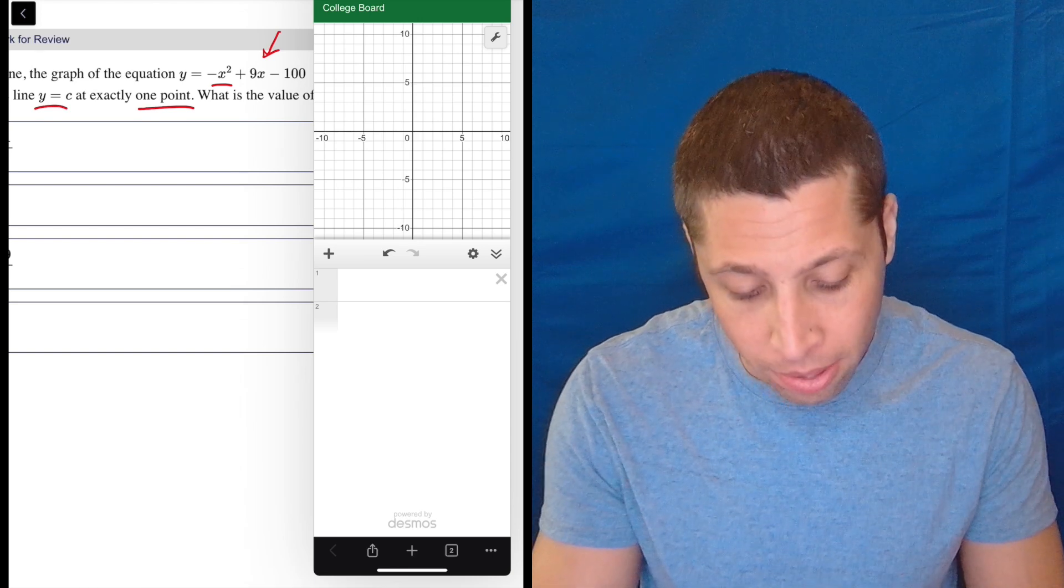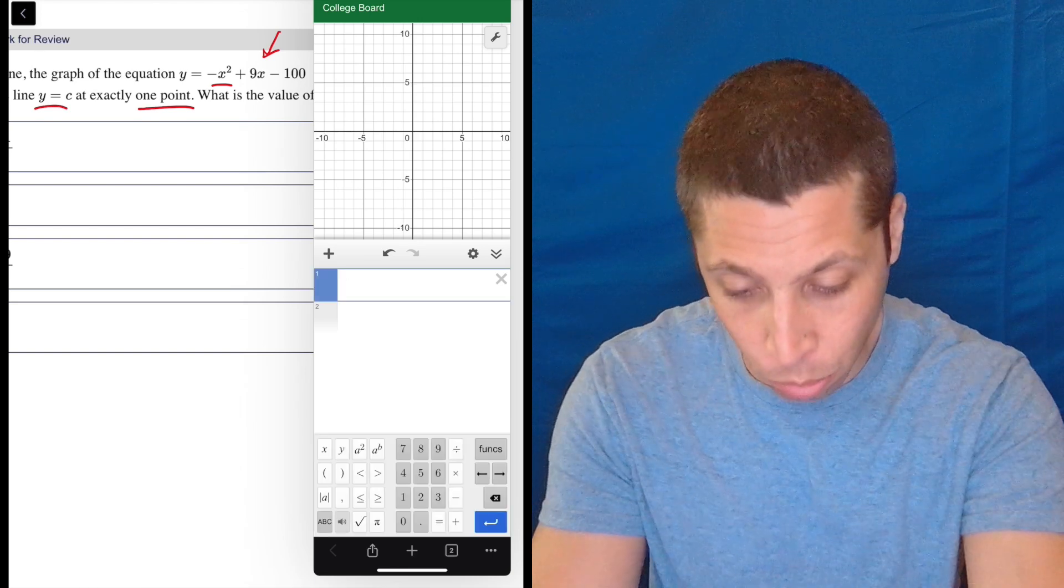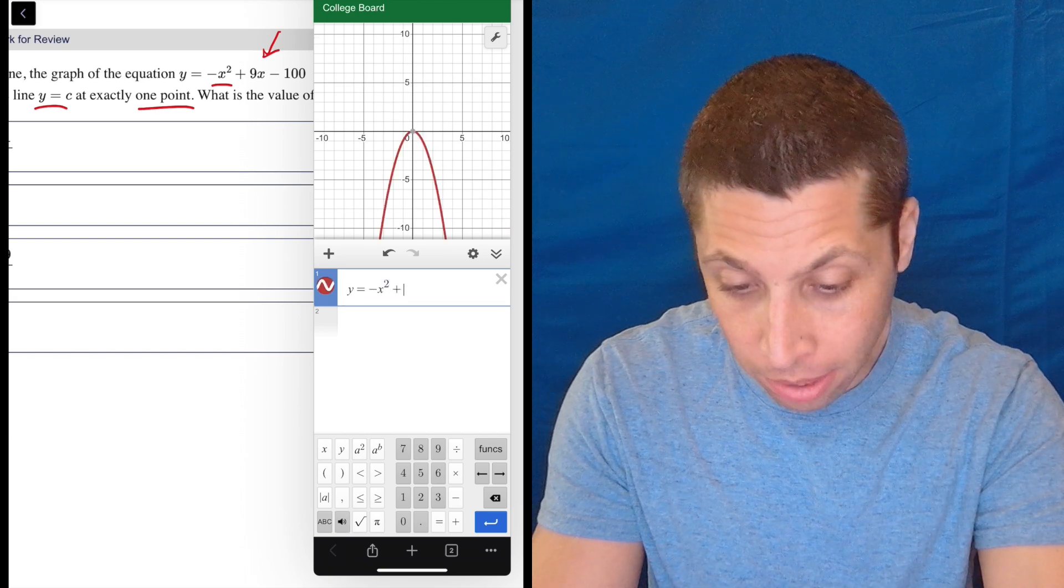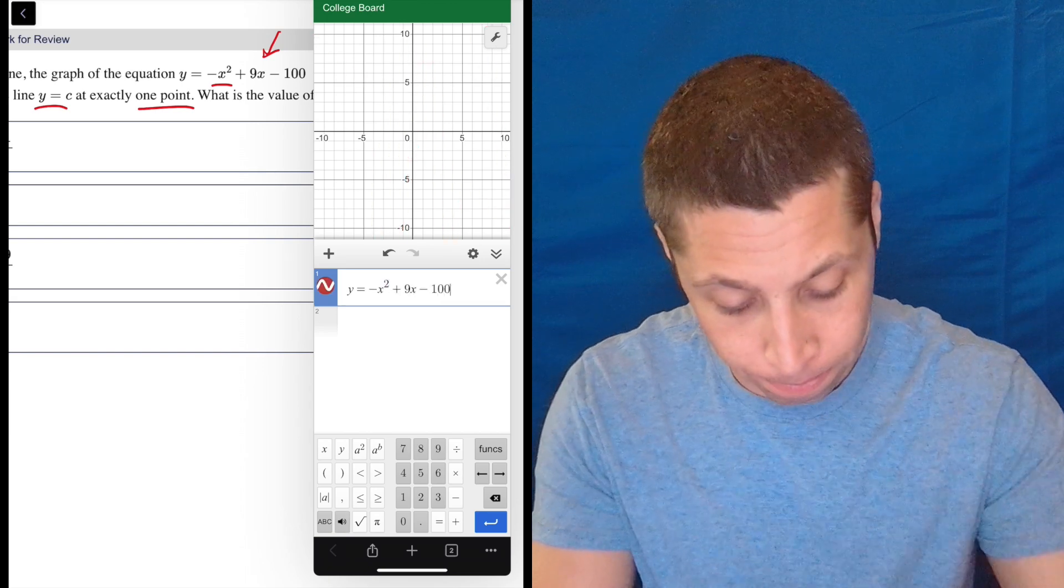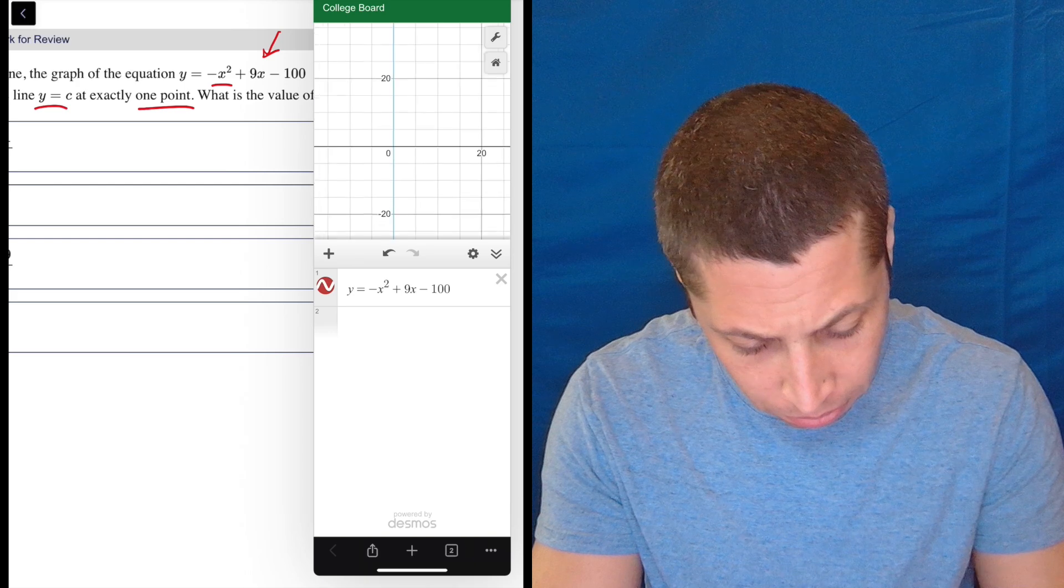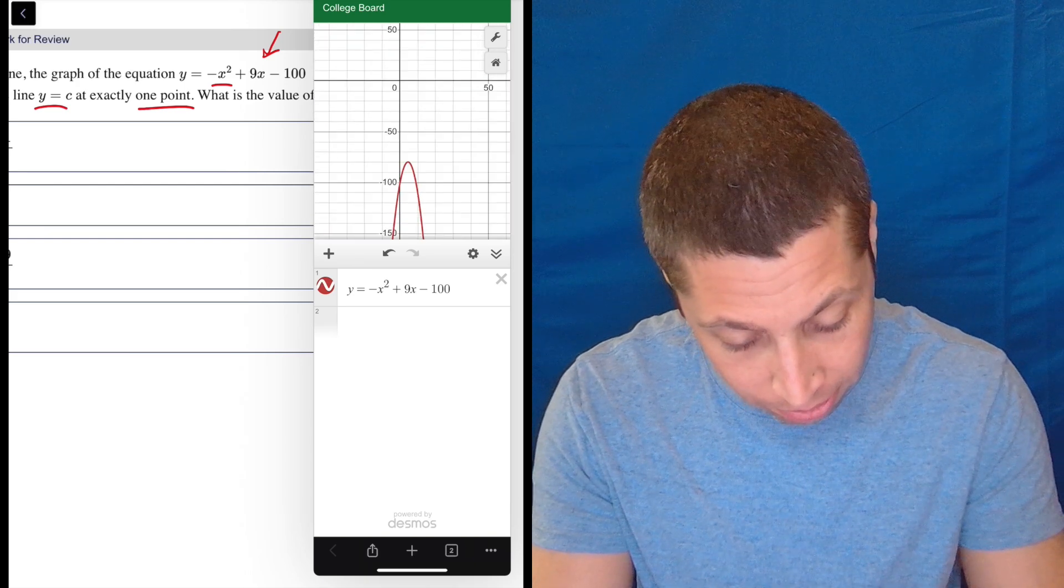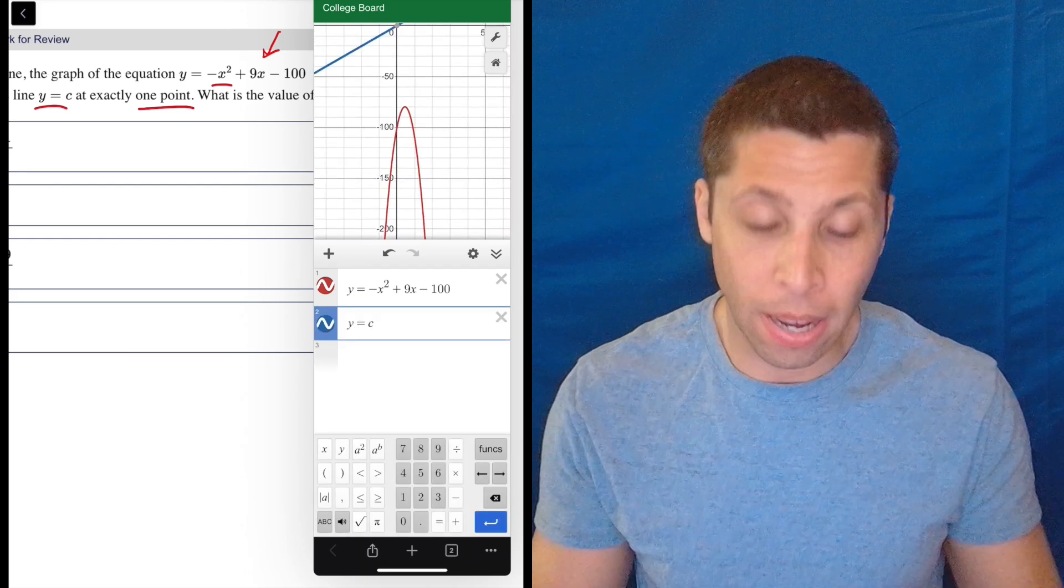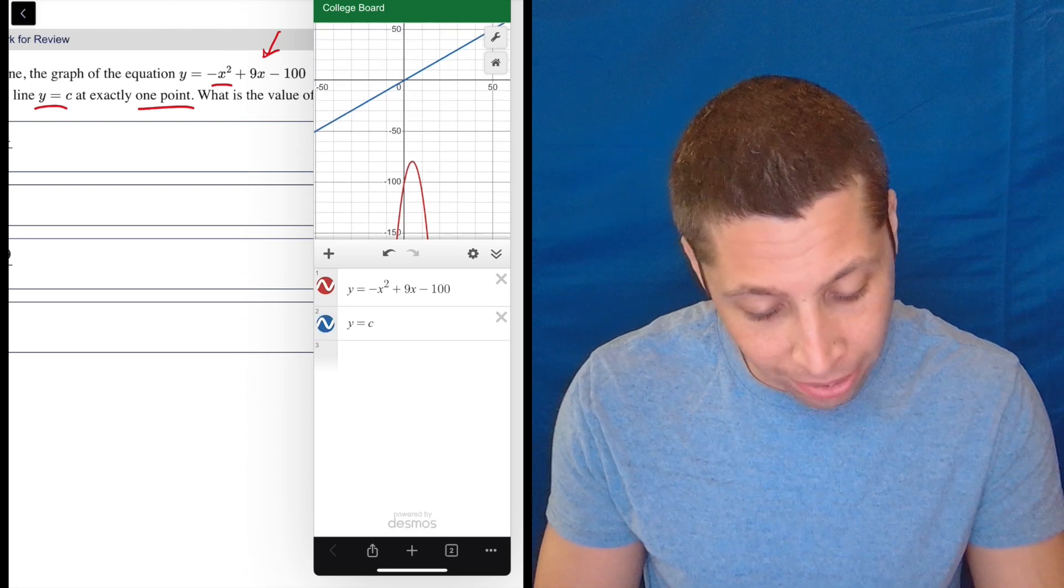So what would I do? Well, first I want to type this initial equation, this quadratic. So y is equal to negative x squared plus 9x minus 100. So I get some sort of parabola somewhere, I guess. Here it is. And now if I do y equals c, I get, ooh, interesting. I don't know why it does this sometimes. It thinks for whatever reason c is an x here. I don't want that.